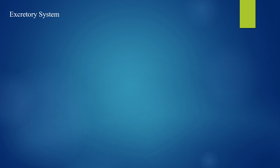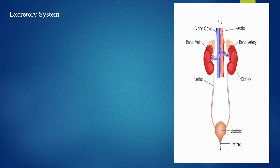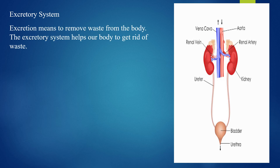Next: the excretory system. Excretion means to remove waste from the body. When we eat food, the digested parts are used by the body, but the undigested food must be removed. The part of the body that removes this undigested waste is the anus.